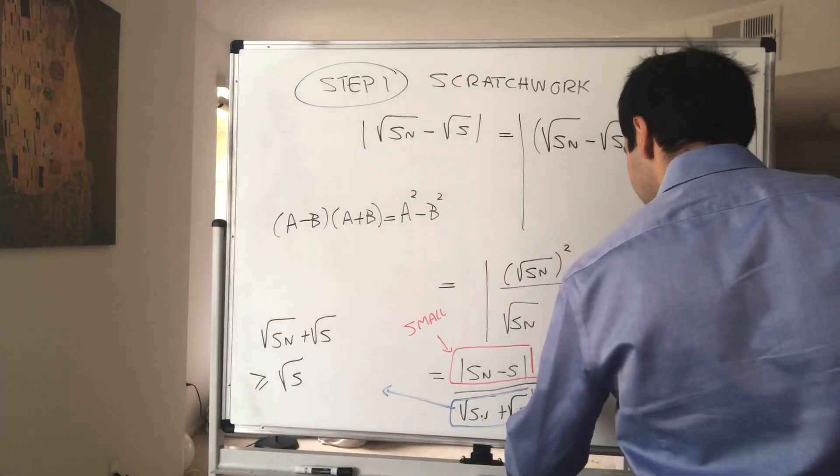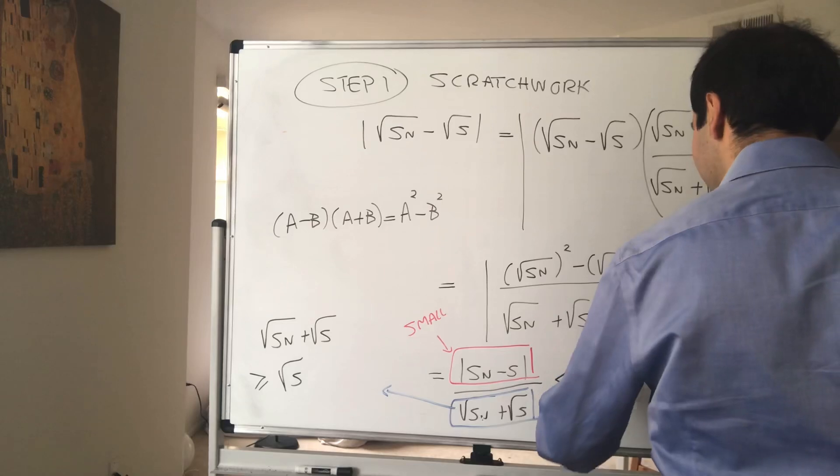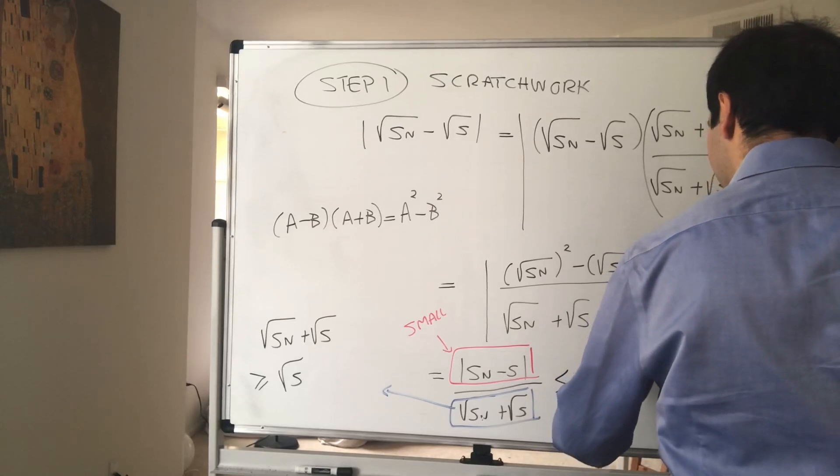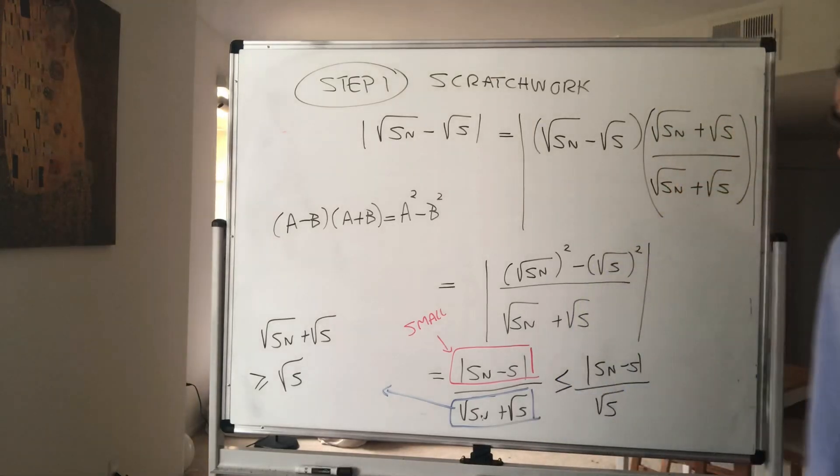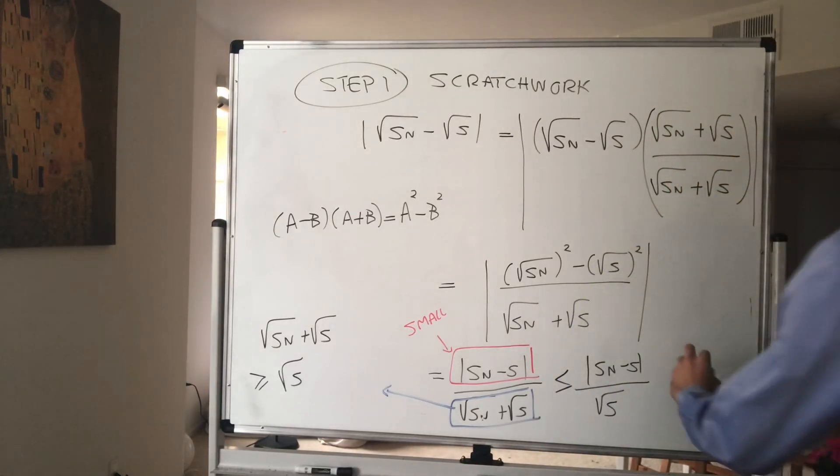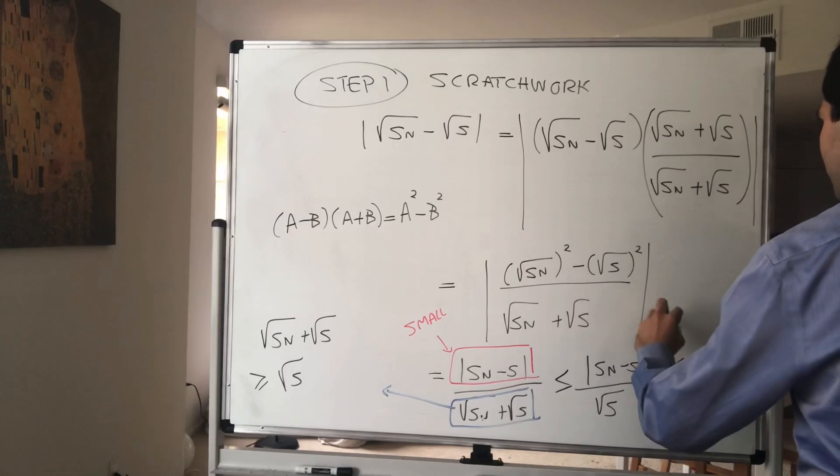In particular, this thing becomes less than or equal to Sn minus s over square root of s. And what we want, we want this to be less than epsilon.